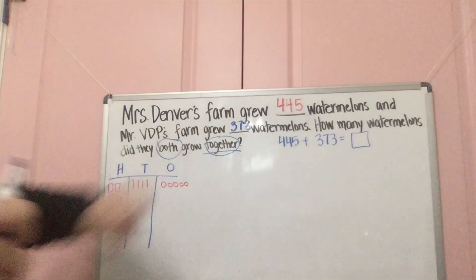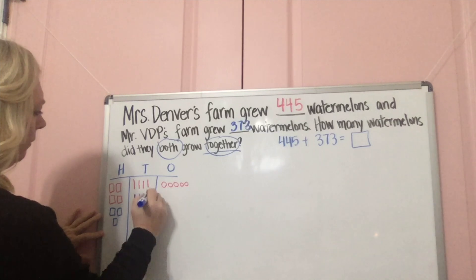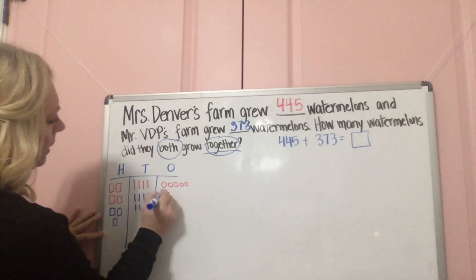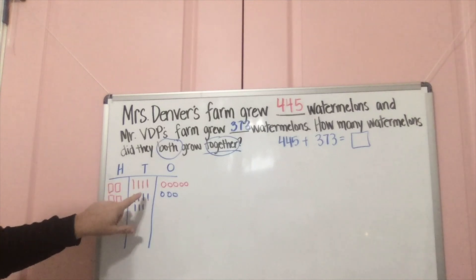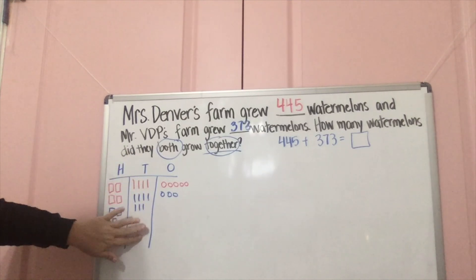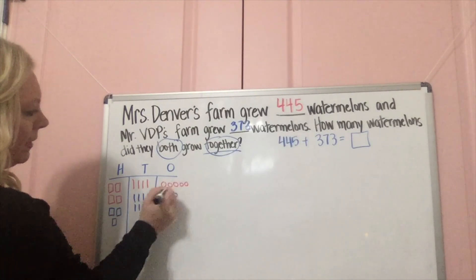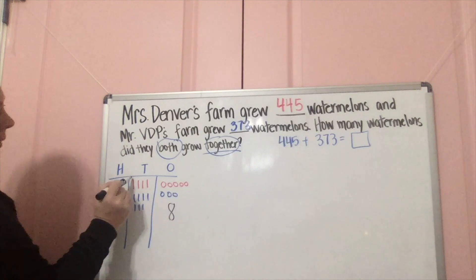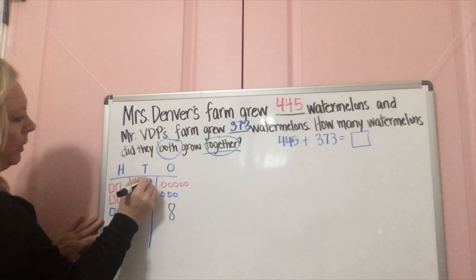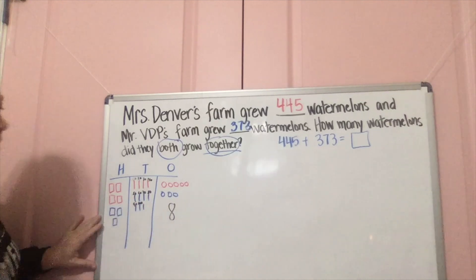Mr. Vanderpool has 373, so: 100, 200, 300 — then 10, 20, 30, 40, 50, 60, 70 — and 1, 2, 3. Looking at the problem, I can see I'm probably going to have to regroup in the tens. Remember, you can't have more than 10 here — if you have more than 10, it goes to the hundreds. Let's start with the ones: 1, 2, 3, 4, 5, 6, 7, 8. Good — no regrouping needed there, so I have 8 in the ones place.